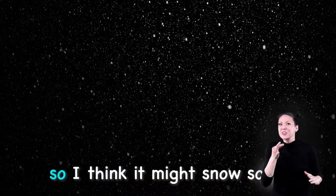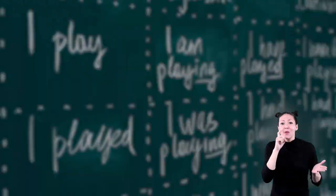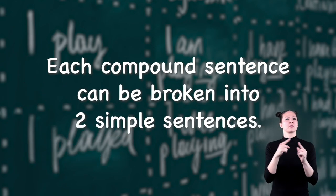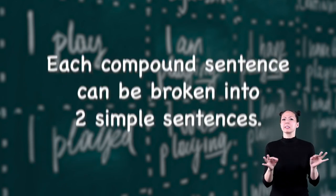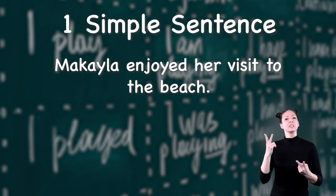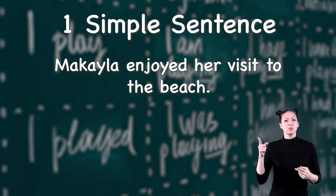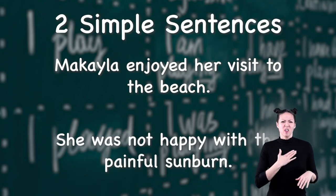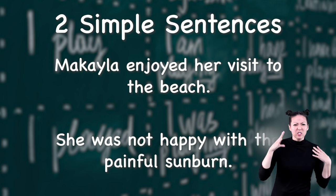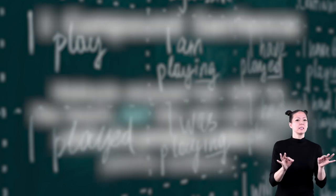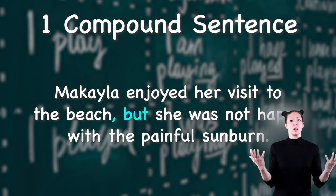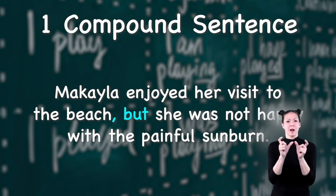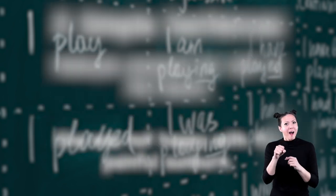'Do you want some broccoli, or would you rather have a piece of cake?' 'The sky is getting cloudy, so I think it might snow soon.' Notice how each of those compound sentences can be broken into two simple sentences. 'Michaela enjoyed her visit to the beach' is one simple sentence, and 'she was not happy with the painful sunburn' is another simple sentence. When joined together by the word 'but,' it becomes a compound sentence.